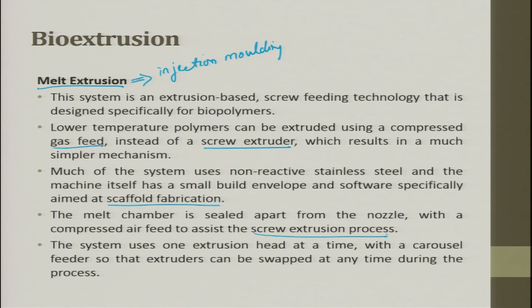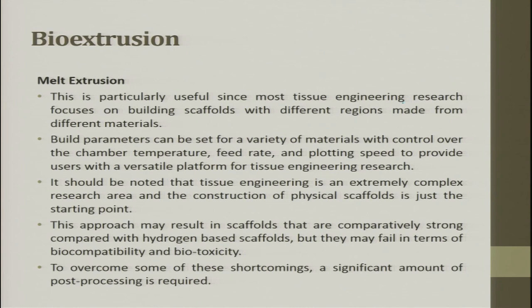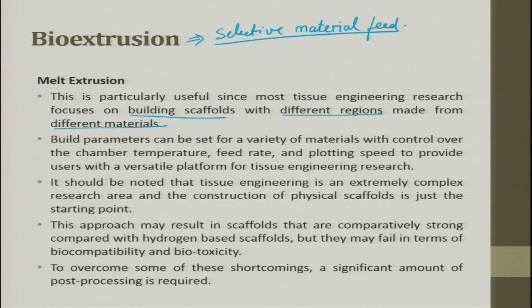The melt chamber, as seen in FDM, is sealed apart from the nozzle, with a compressed air feed replacing the screw for extrusion. The system uses one extrusion head at a time, but you can have multiple extrusions from different nozzles — you can blend materials or use different colors with a carousel feeder. The extruder can be swapped at any time during the process. Build parameters can be set for a variety of materials, with control over chamber temperature, feed rates, and plotting speed.